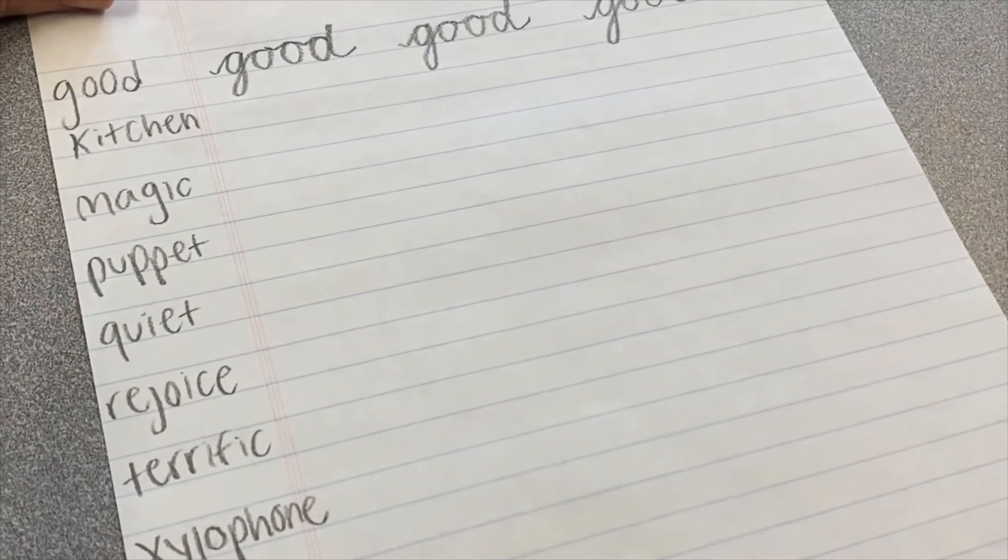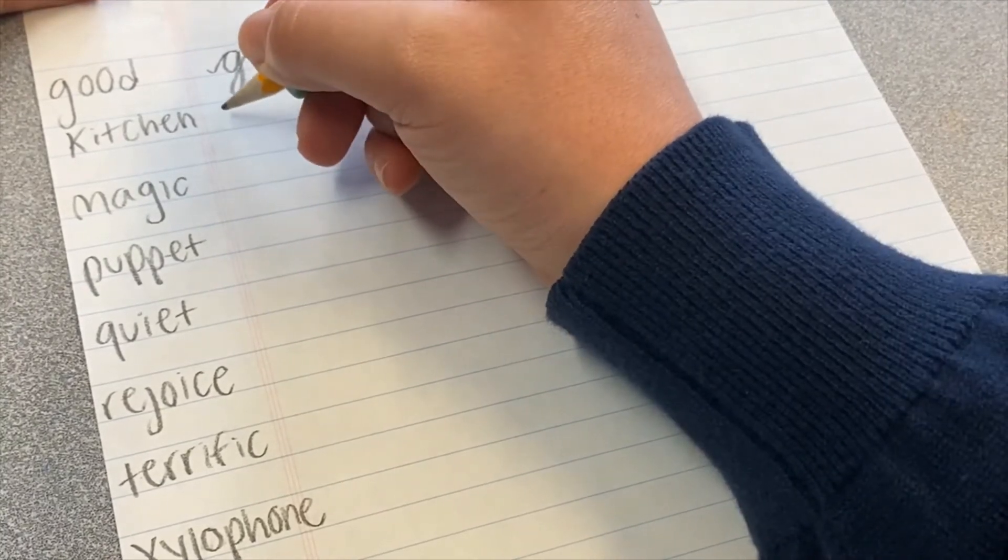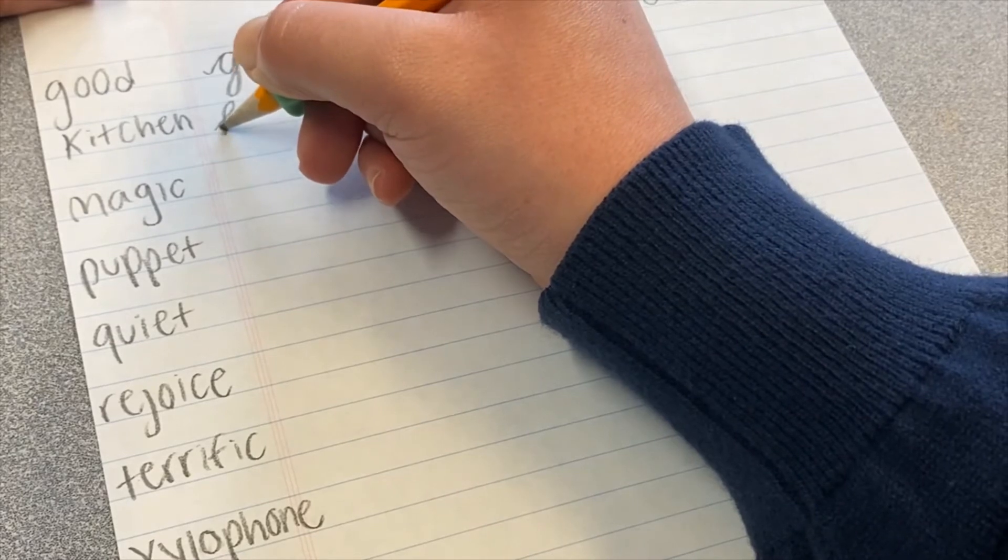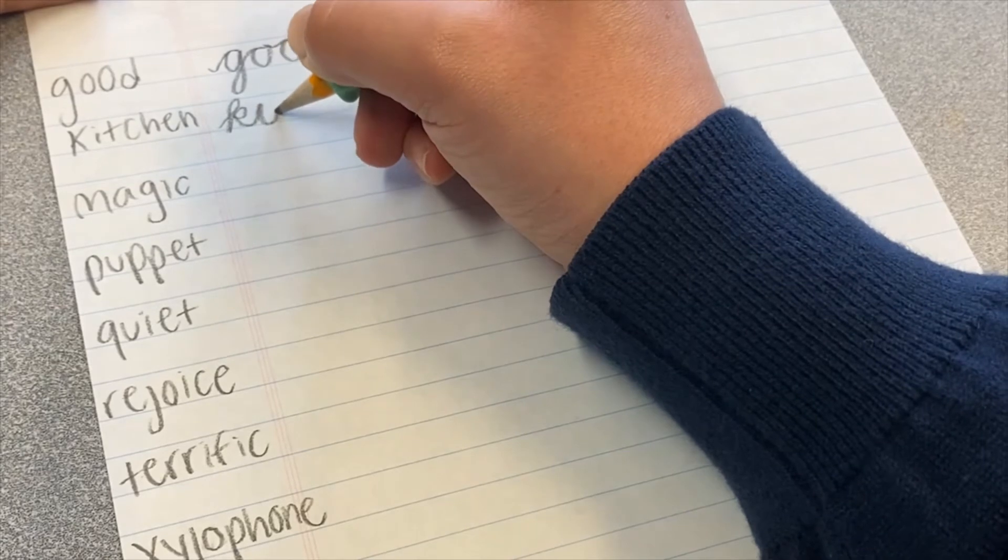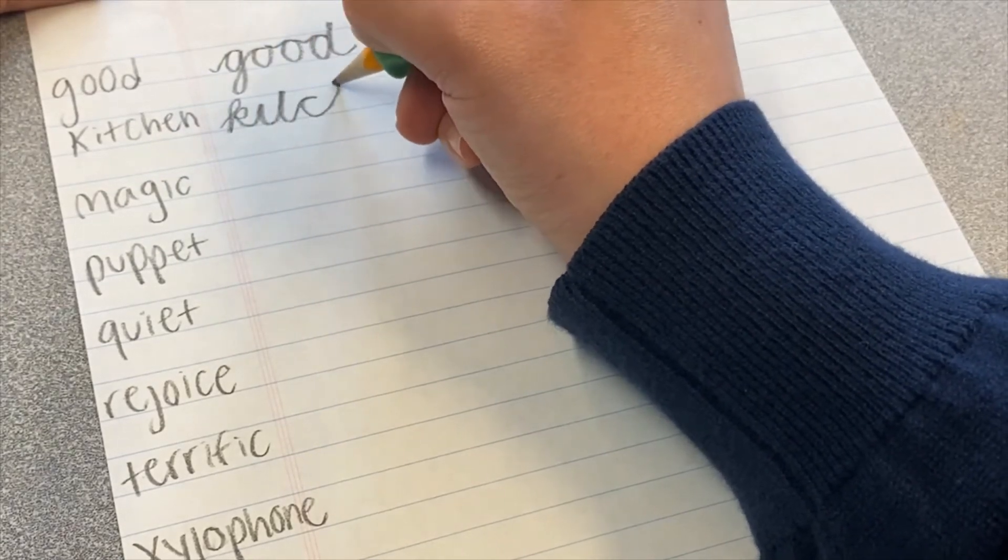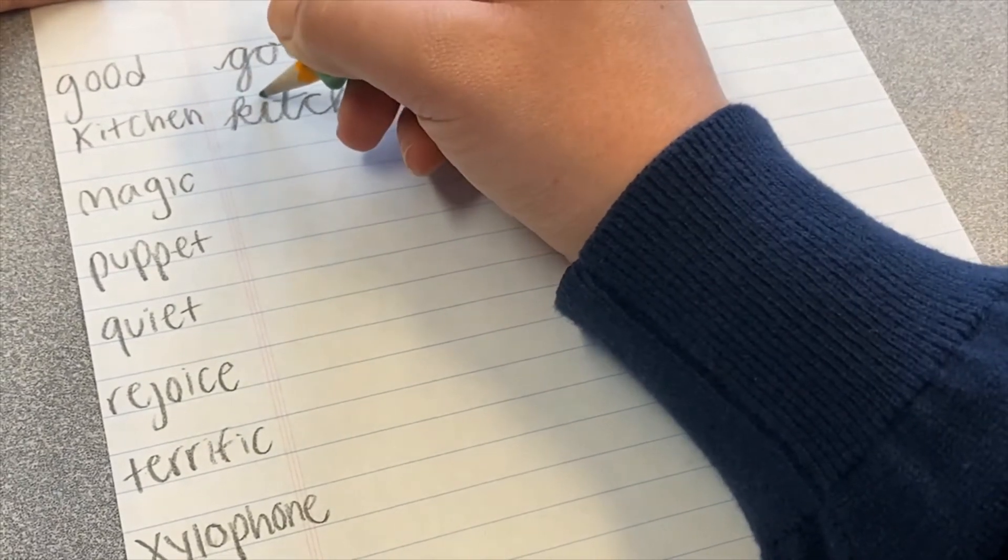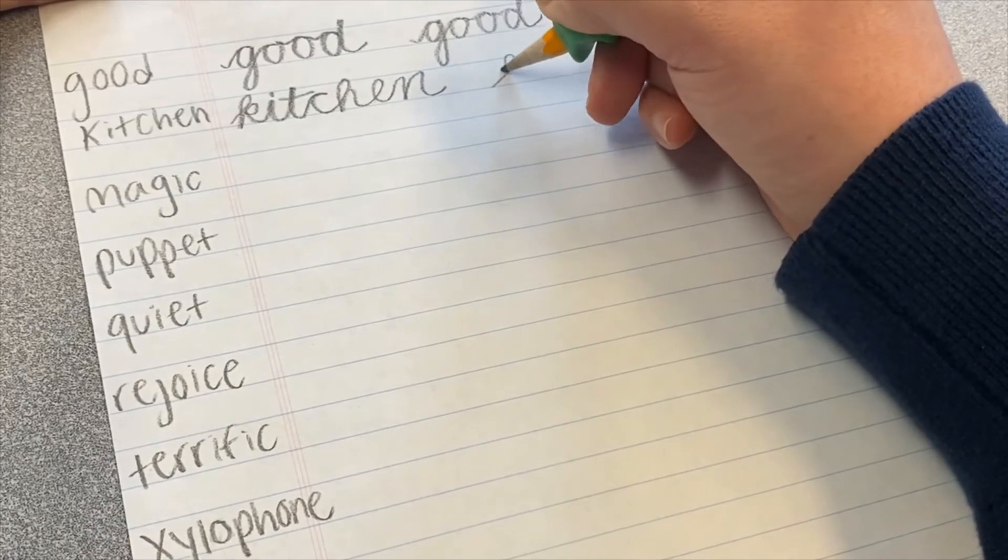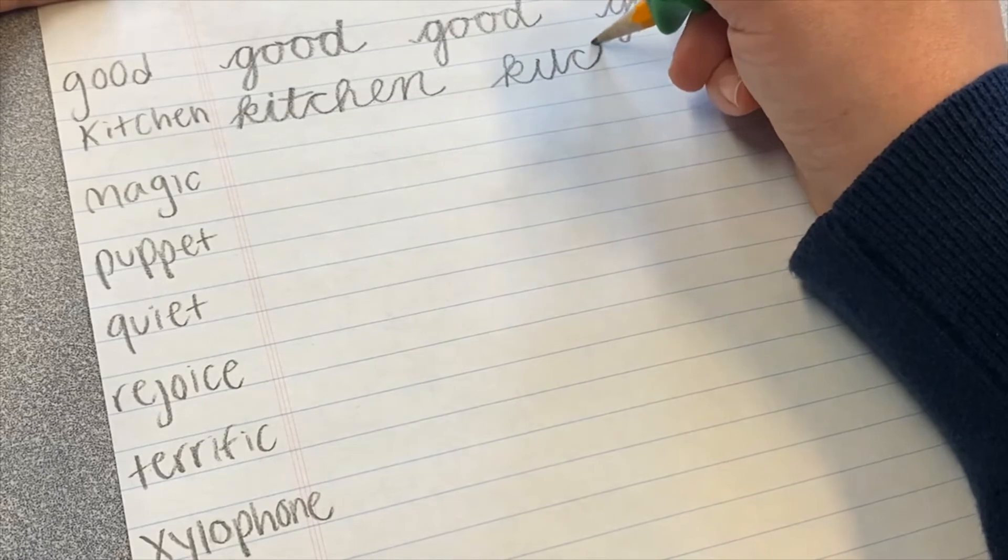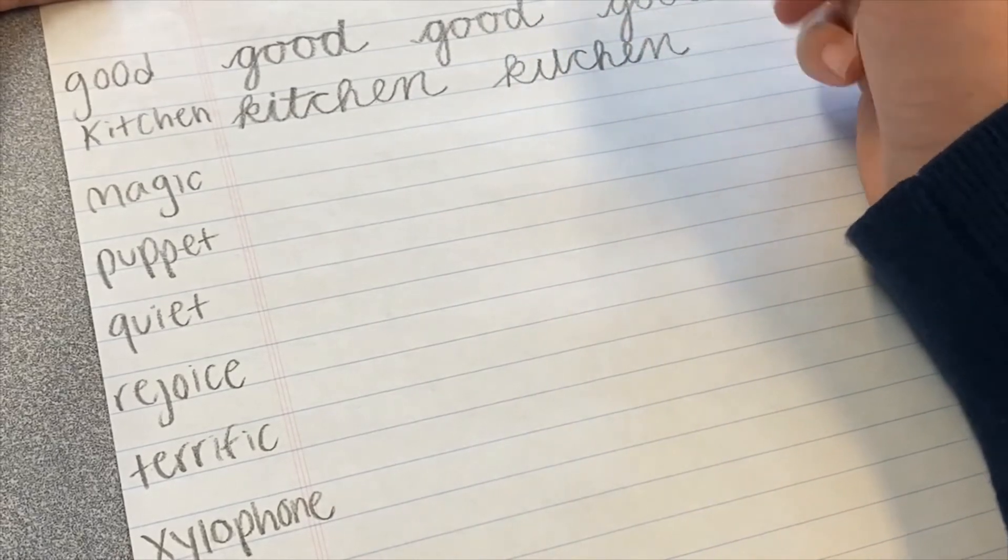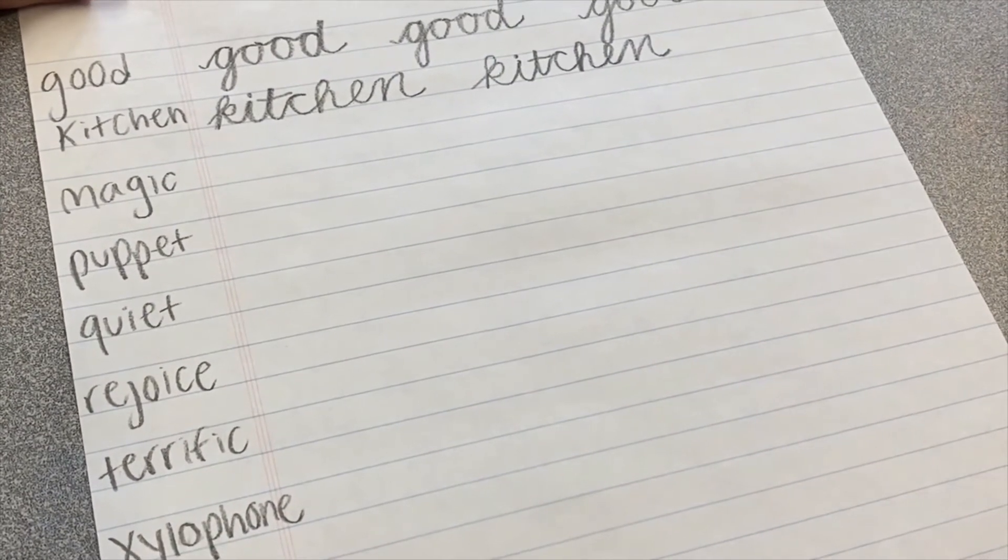Next up, we've got the word kitchen. And that we'll make with our K. Loop, loop, in, out, up to the I, up to the T, C, looping H, E, and an N. Line and dot. I guess I can only fit two kitchens, which is okay.